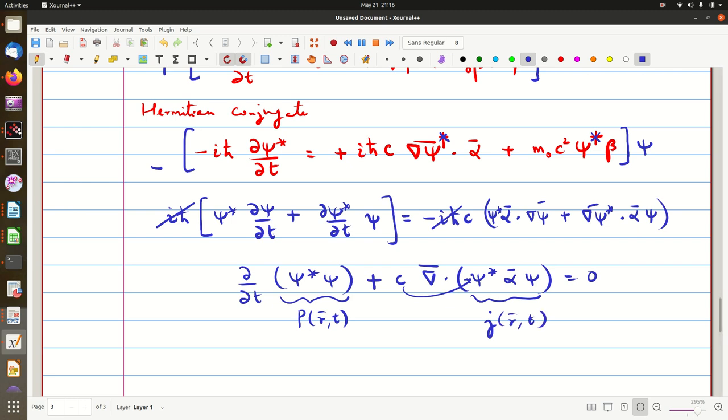So this is the continuity equation when you try to derive it from the Dirac equation. What we notice is, again, you got back ρ as mod ψ squared, just like in the non-relativistic case. That is all for this video. Thank you.